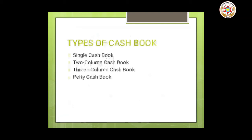The second is the two column, or double column, cash book. It has two columns: the cash column and the discount column. The cash column records cash receipts and payments, while the discount column records discount received and discount allowed. The discount column on the debit side represents discount allowed, and on the credit side represents discount received. There are two types of discount: trade discount, which is a deduction granted by a supplier from the list price due to large quantity of sales or business tradition, and cash discount, which is allowed on payment of money.